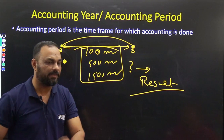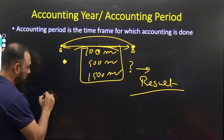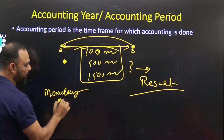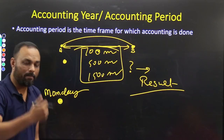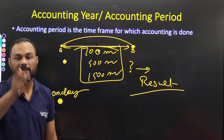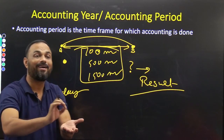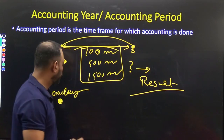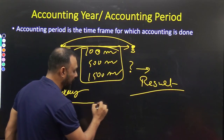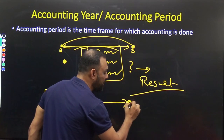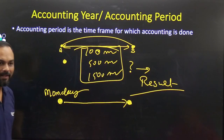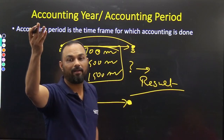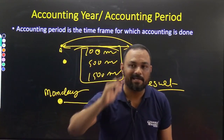For example, in accounting, let's say Monday is the starting point — accounting starts on Monday. We start accounting, and there are activities that need to be completed. If there is no defined ending point, then the result cannot be determined.